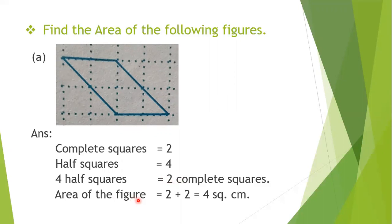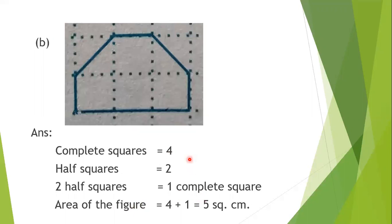So the area of the given figure will be two complete squares plus two complete squares (from the four half squares), which means two plus two is four square centimeters. Now let's look at the next figure.